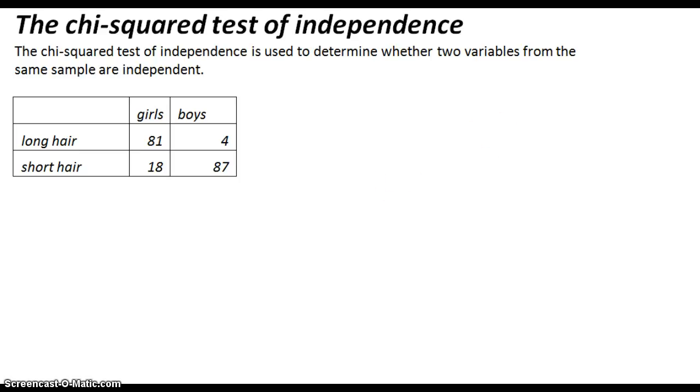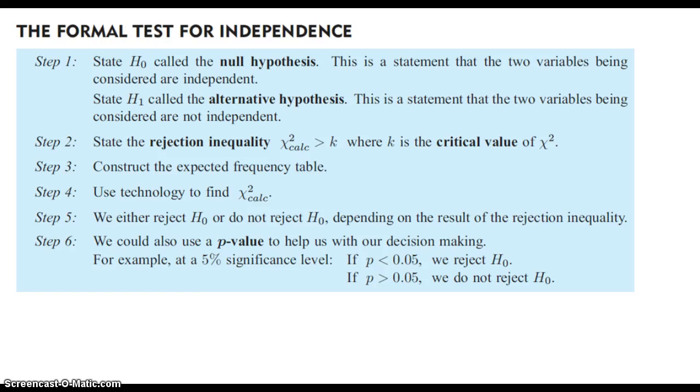Our textbook has a spiel about the formal test for independence. I would really recommend that you take a look at this and follow this step by step, especially for your internal investigation for IB mathematical studies, that you make sure you're very clear about each one of these steps. This video is not going to go over each one of these steps in depth. I'm going to mostly talk about how to use your Casio FX-9860 to find the chi-squared value.